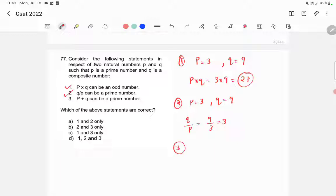In the third option, let's take P is equal to 11. 11 is a prime number and Q is equal to 6. 6 is a composite number. P plus Q is equal to 11 plus 6, equal to 17. 17 is a prime number. So statement 3 is also correct.